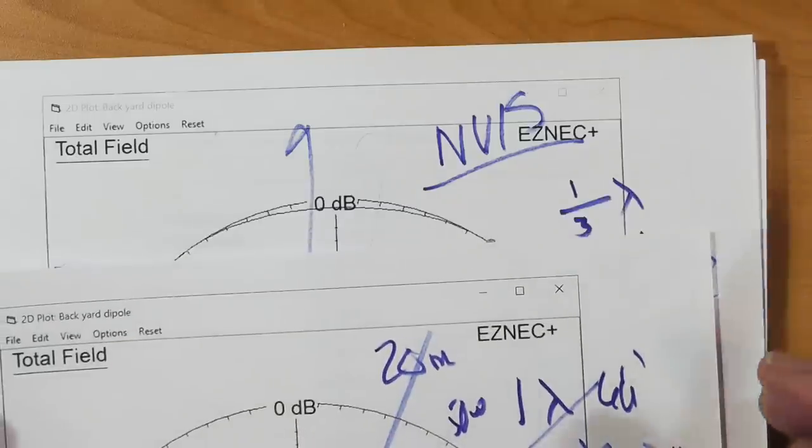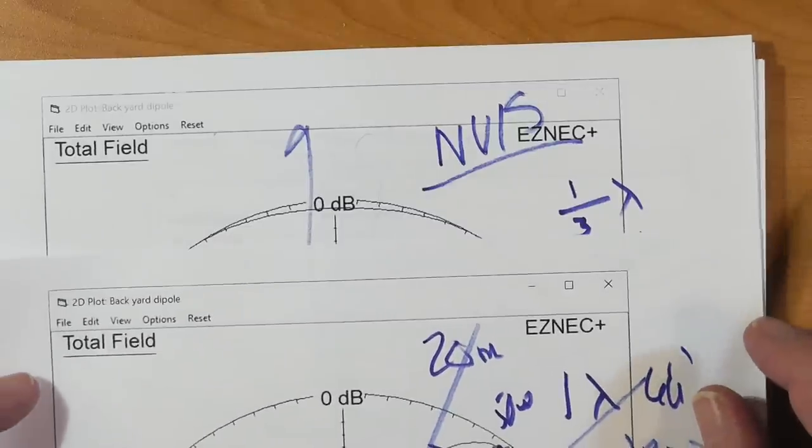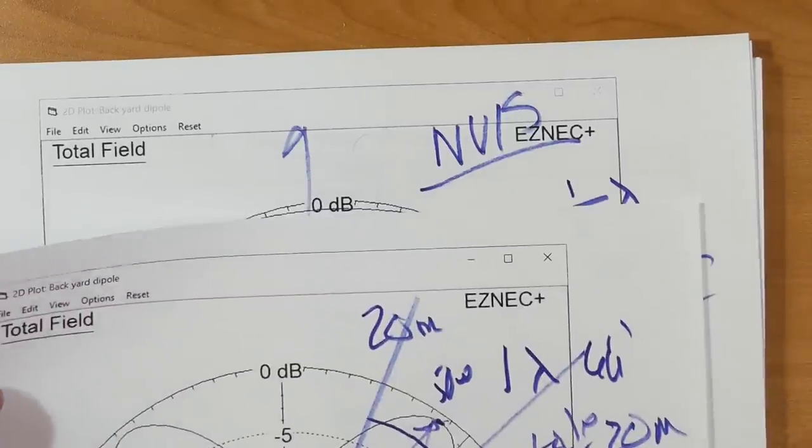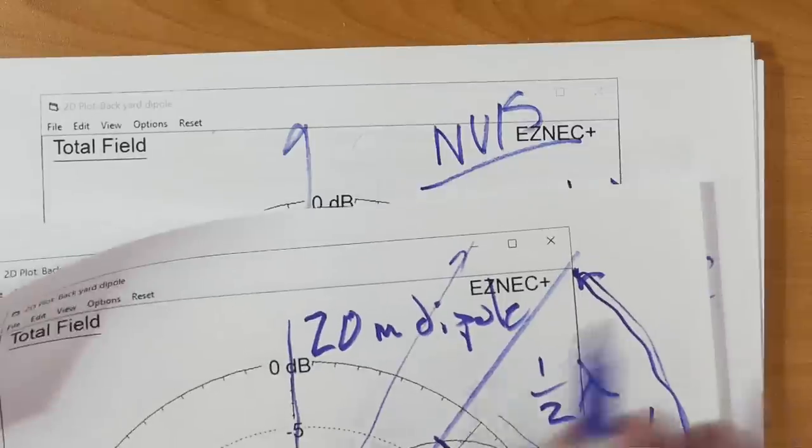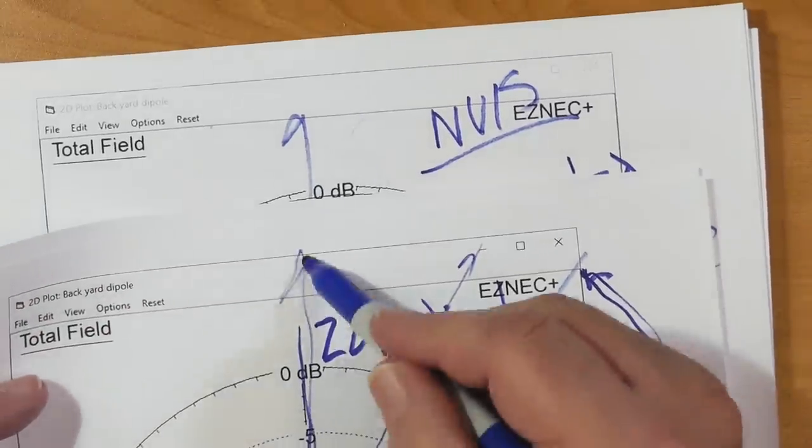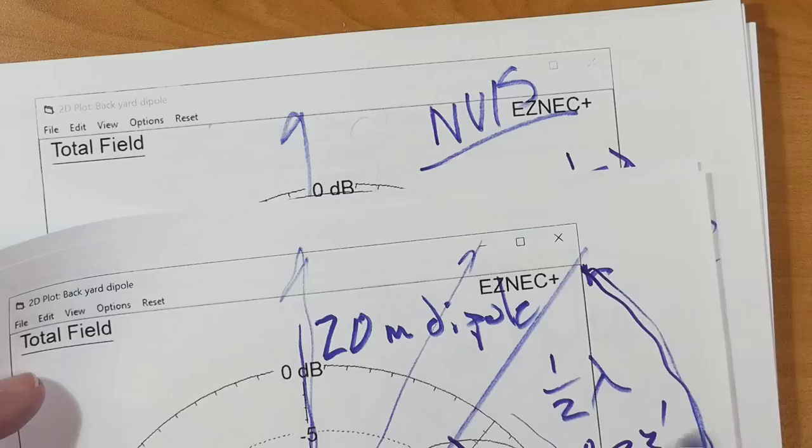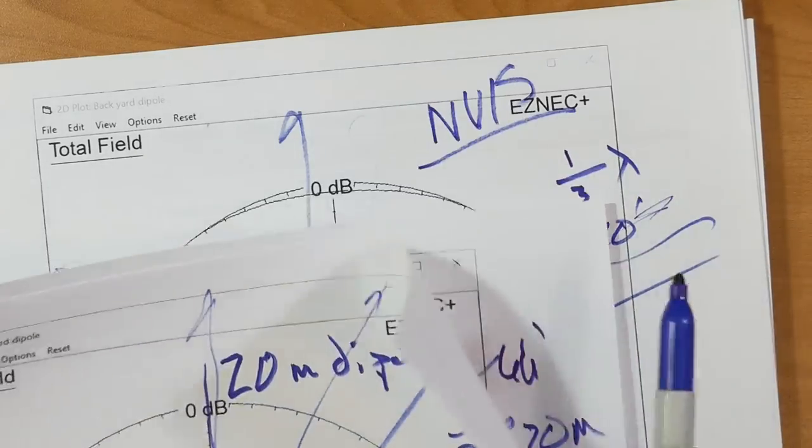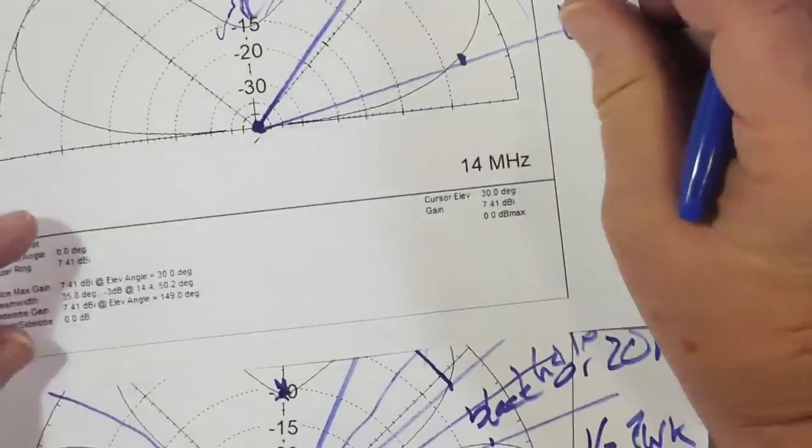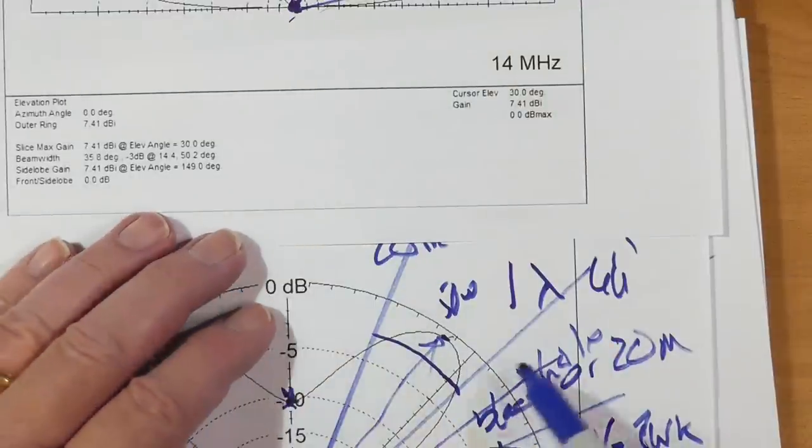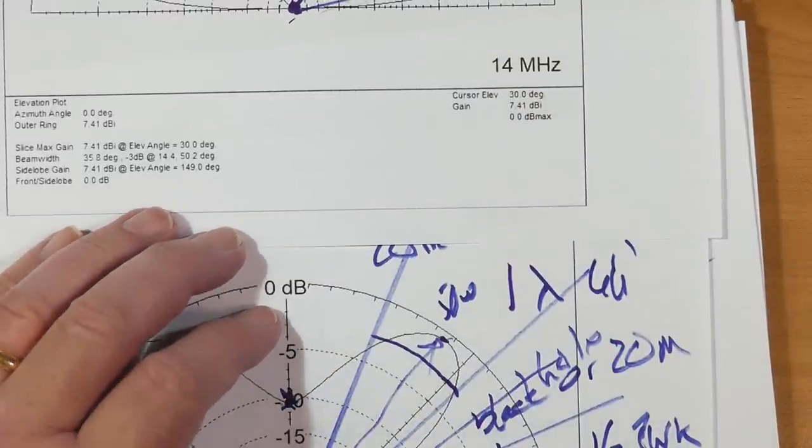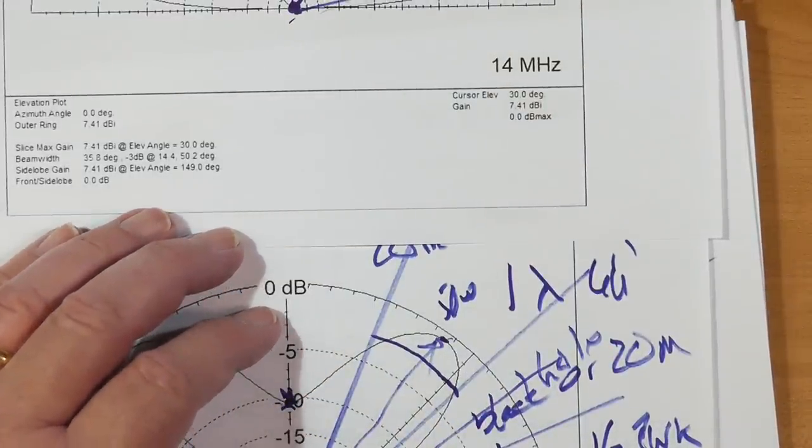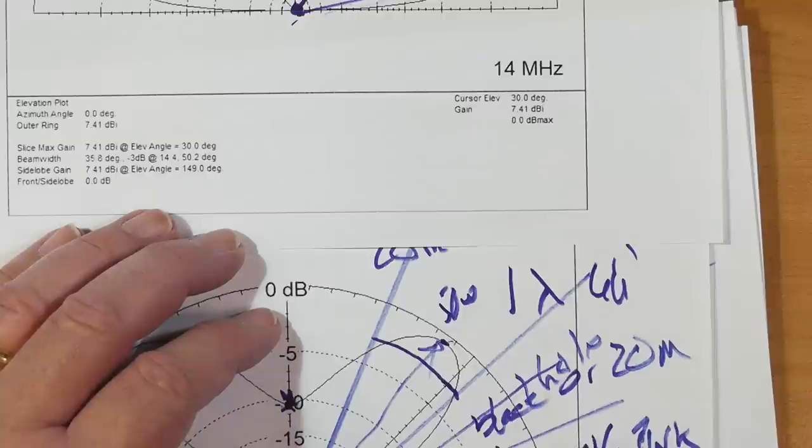This antenna at this height will get near-in contacts, whereas if you go up just 13 more feet, which will give you the original here, you'll lose your NVIS, and your contacts, you can go out closer to the horizon.